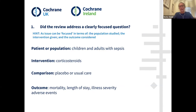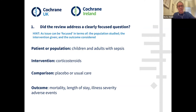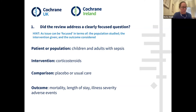For this review, did it answer a clearly focused question? Looking at the PICO: the patient population are children and adults with sepsis, which is clearly defined in the review. The interventions are any types of corticosteroids delivered in any way. Comparison is placebo or usual care. And the main outcomes are mortality, length of stay, illness severity, and adverse events. Have a think about whether that's a yes, no, or can't tell.